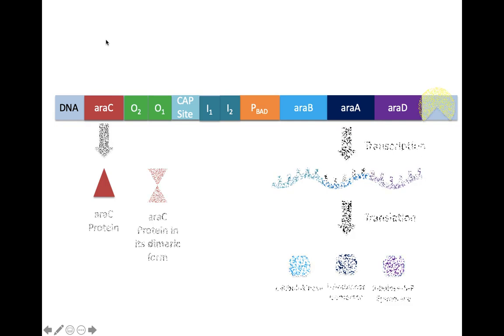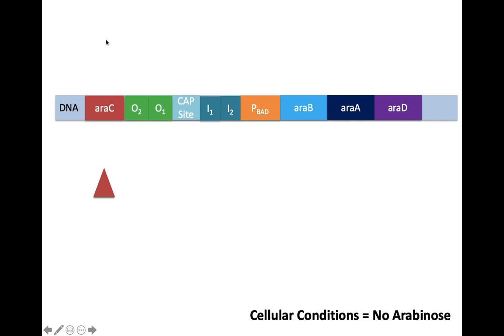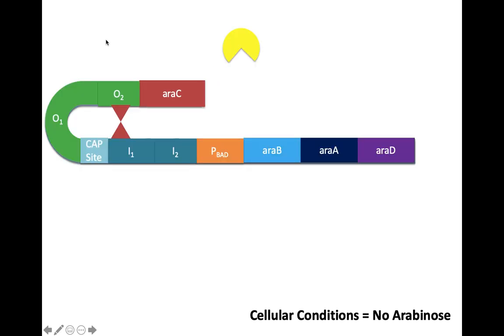In the absence of arabinose, the araC protein will act as a repressor of the operon by binding two non-adjacent sites in the regulatory region of the operon, O2 and I1. This binding causes the DNA to loop and prevents RNA polymerase from being able to access the promoter region.